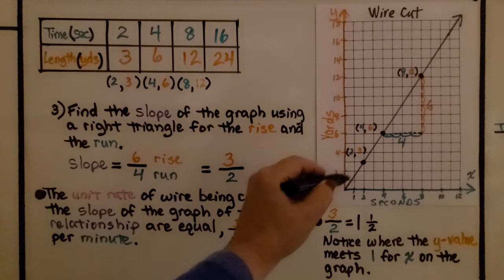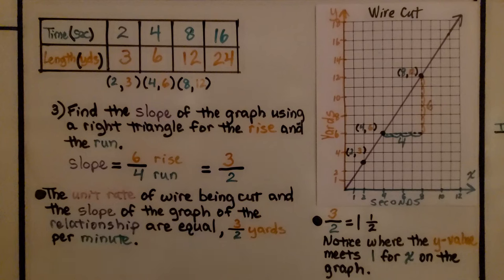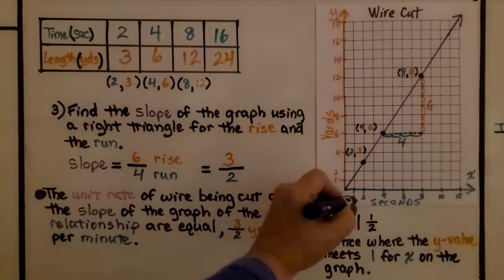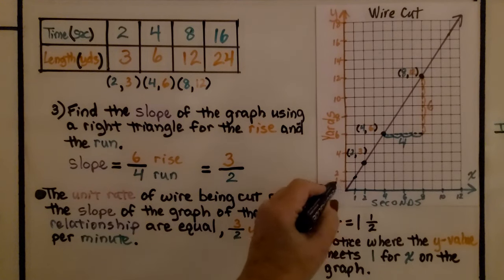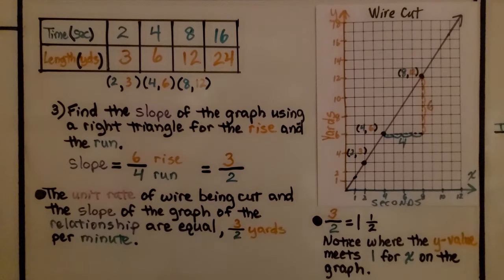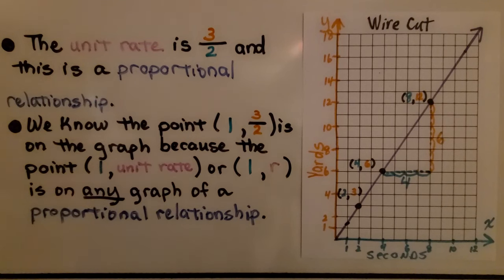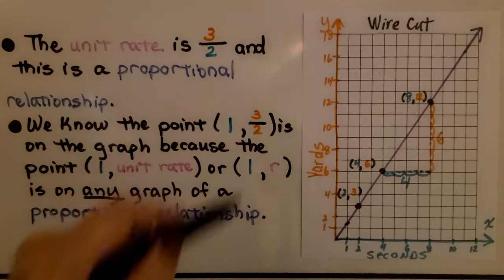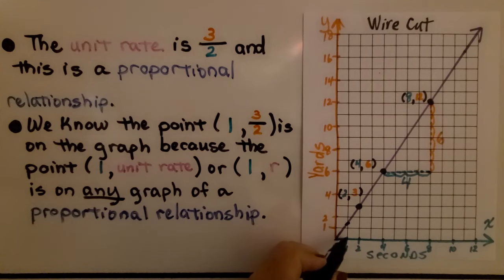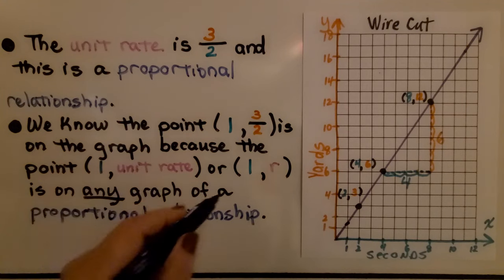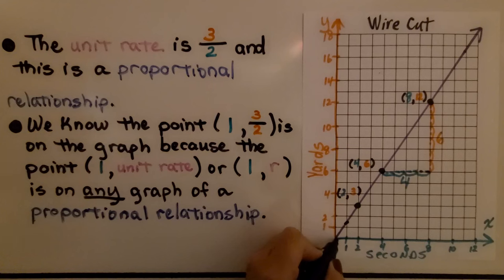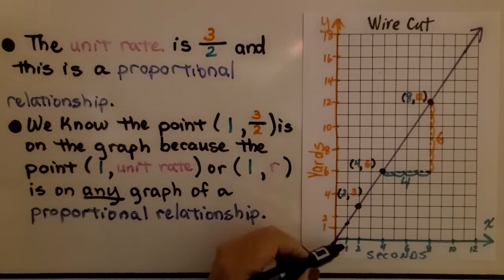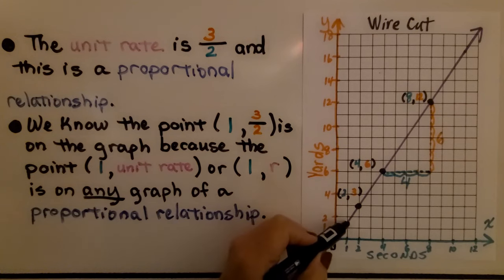The unit rate of wire being cut and the slope of the graph of the relationship are equal. We have three over two yards per second. Three over two simplifies to one and a half. Notice where the y value meets x equals one on the graph — it meets the y value at one and a half. That's our unit rate. We know the point (1, 3/2) is on the graph because the point one for x and the unit rate for y is on any graph of a proportional relationship.